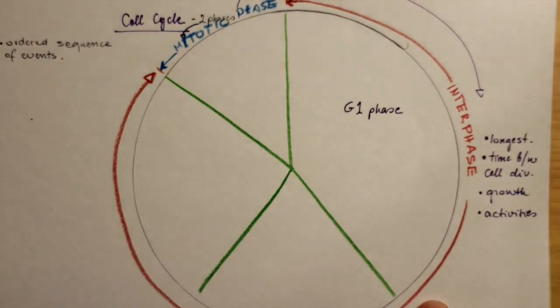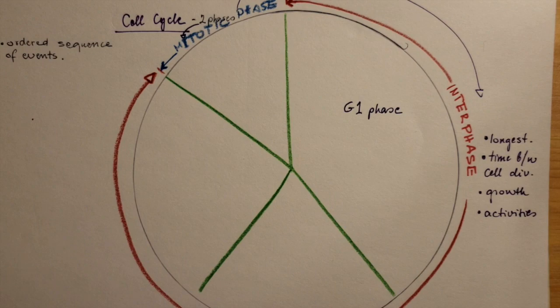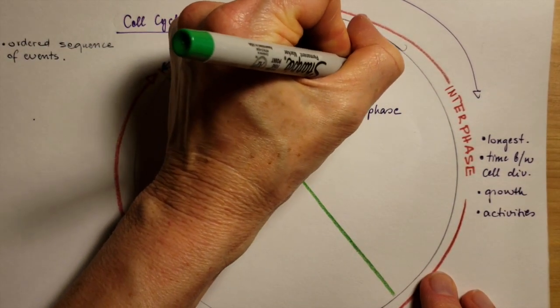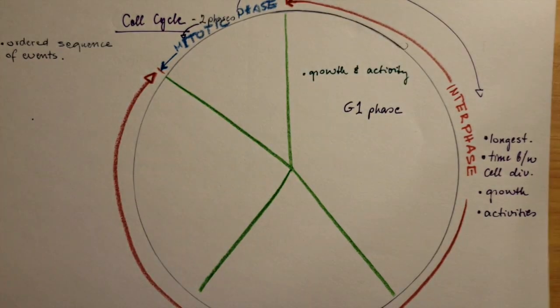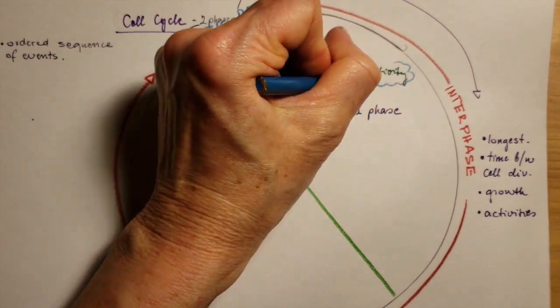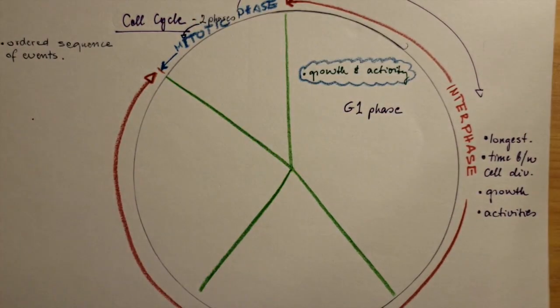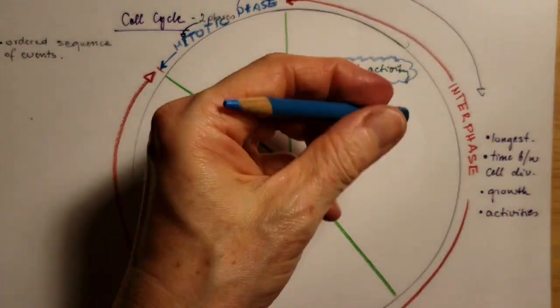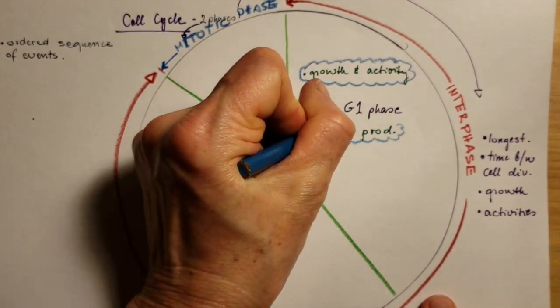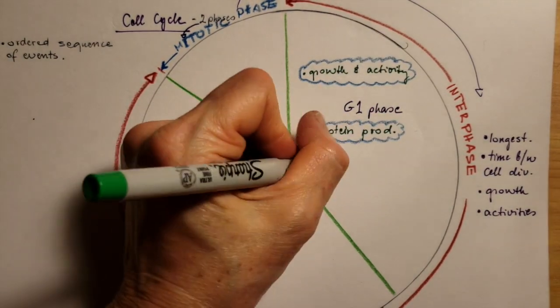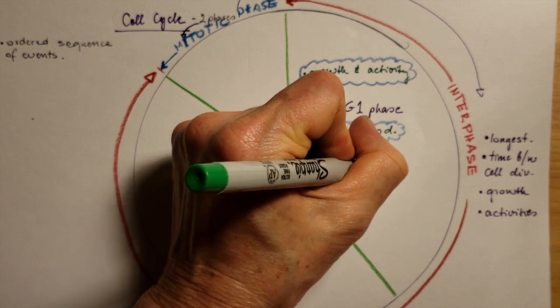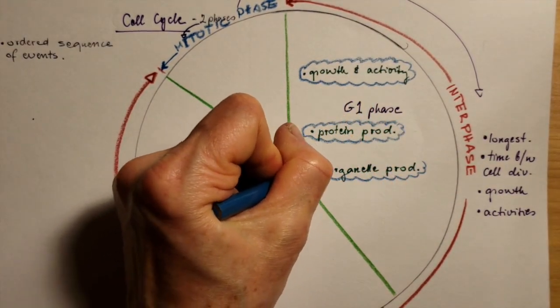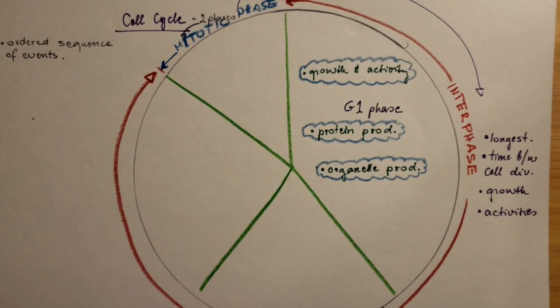The G1 phase, this is the first gap phase. And what is really happening in here? Growth and activity for the cell to do its job. The other one is protein production. Making proteins, making the enzyme hormones, signaling molecules, all of what we covered with the protein, the importance of the proteins.